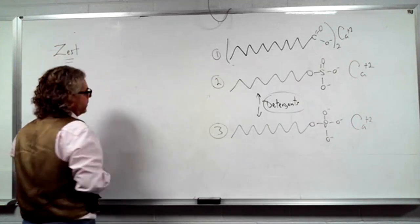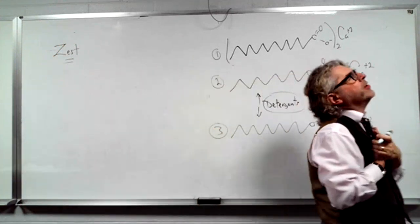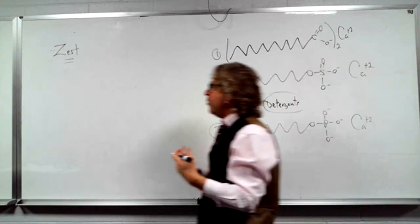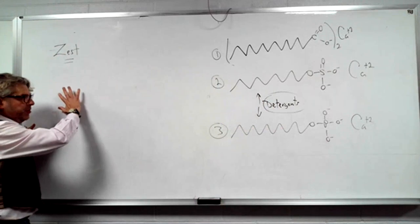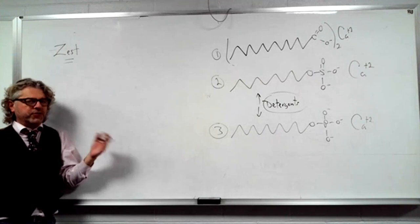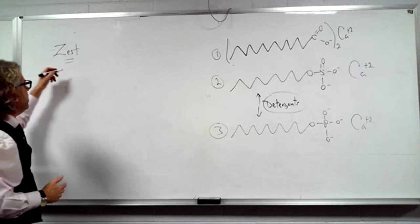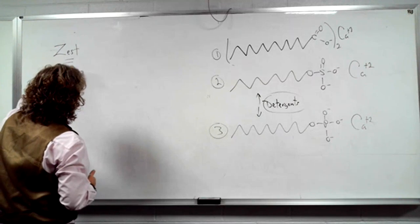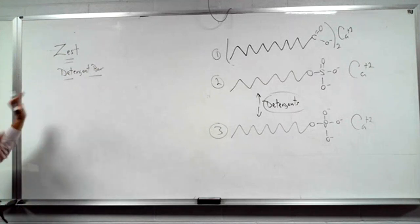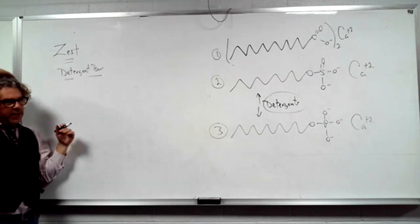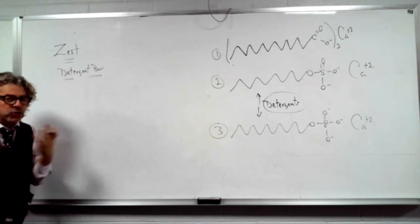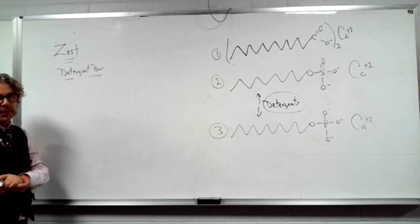There's a special bar you can buy — like Zest or Irish Spring — and they always show on the commercial there's no film or build-up with Zest. But if you read it, it says 'detergent bar.' So it's a way of getting around the insoluble soap scum if you live in this part of the country with hard water — you can just buy a detergent bar for yourself and you won't have the insoluble soap scum problem.